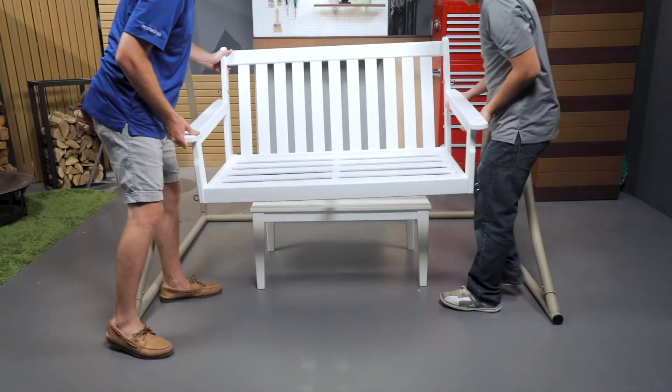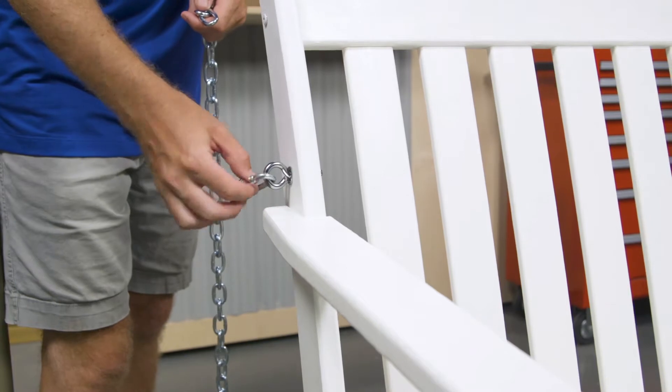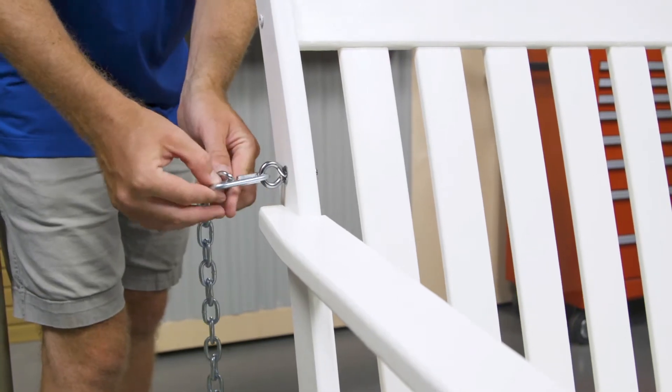There are four provided chains in your hardware pack. Attach one chain to the eye bolts on each side of the swing using the provided quick links.